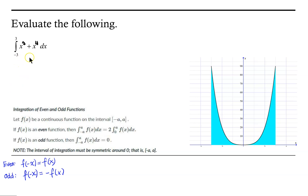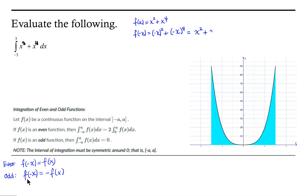So let's look at this example. Our integrand, our function, is x squared plus x to the fourth. What happens if I evaluate my function at negative x? So f at negative x would be negative x squared plus negative x to the fourth power. Well, if I square negative x, that's the same as just squaring x, so that's x squared — it becomes positive. And if I raise negative x to the fourth power, that will be positive as well, ending up as x to the fourth. So I end up with the function I started with — our function is even.